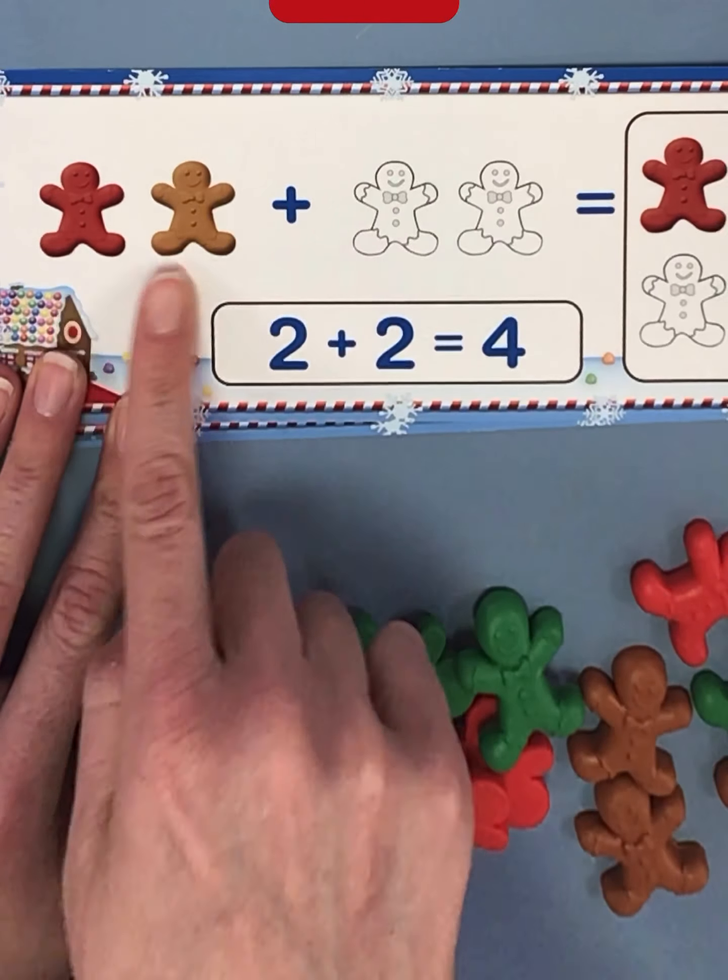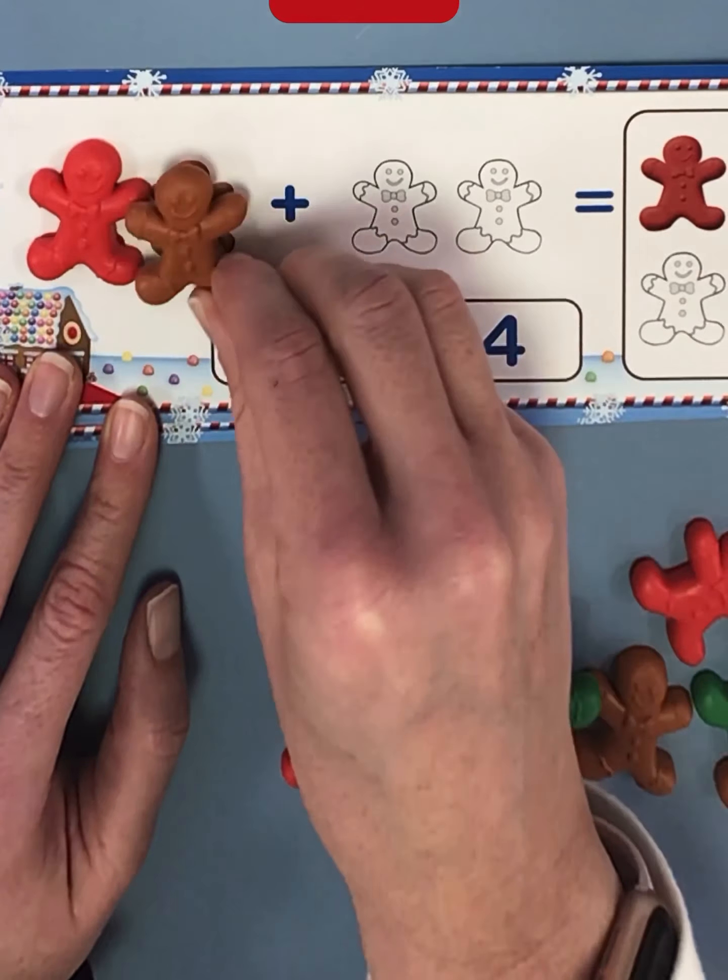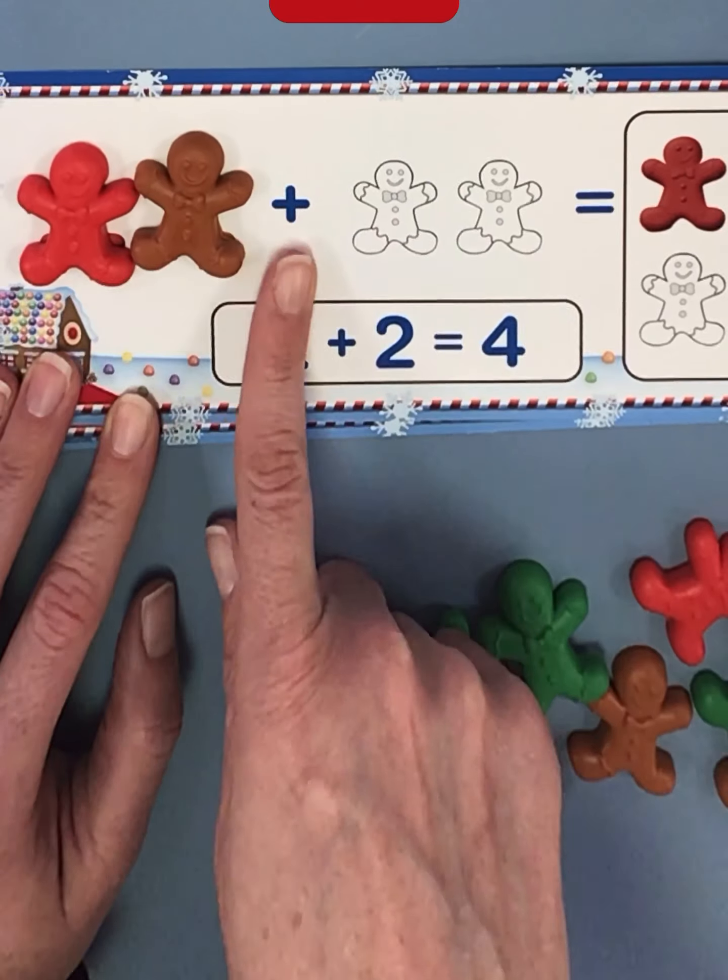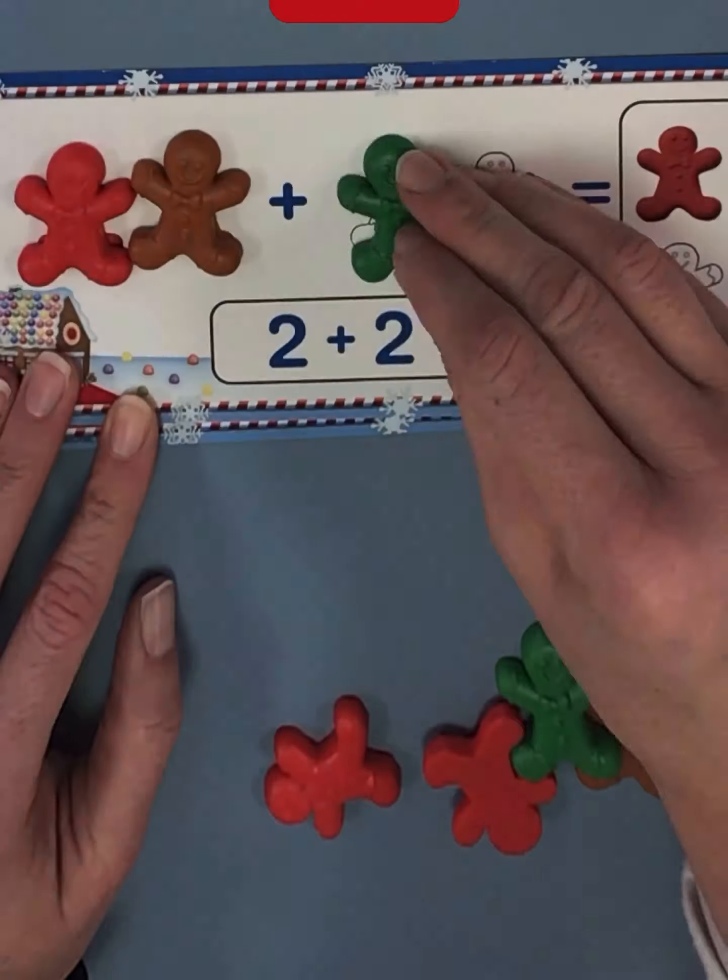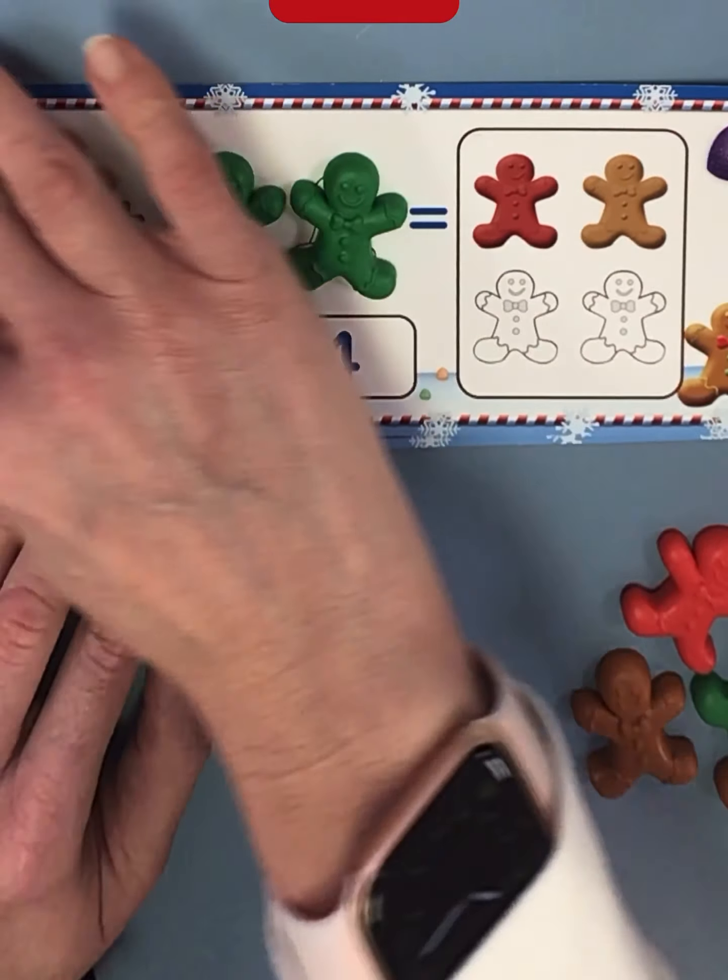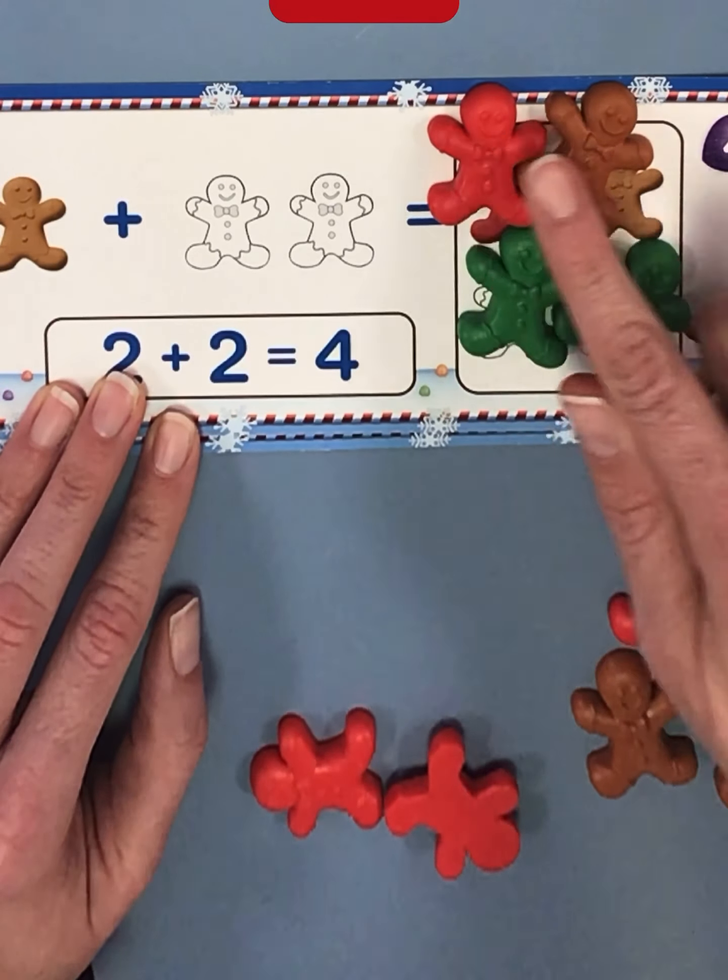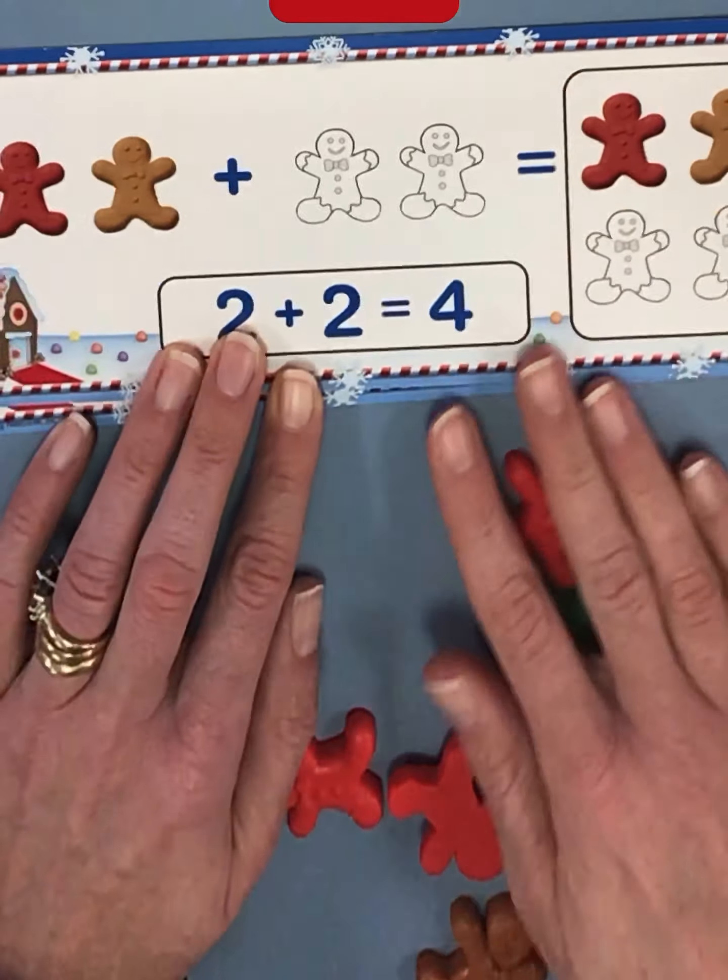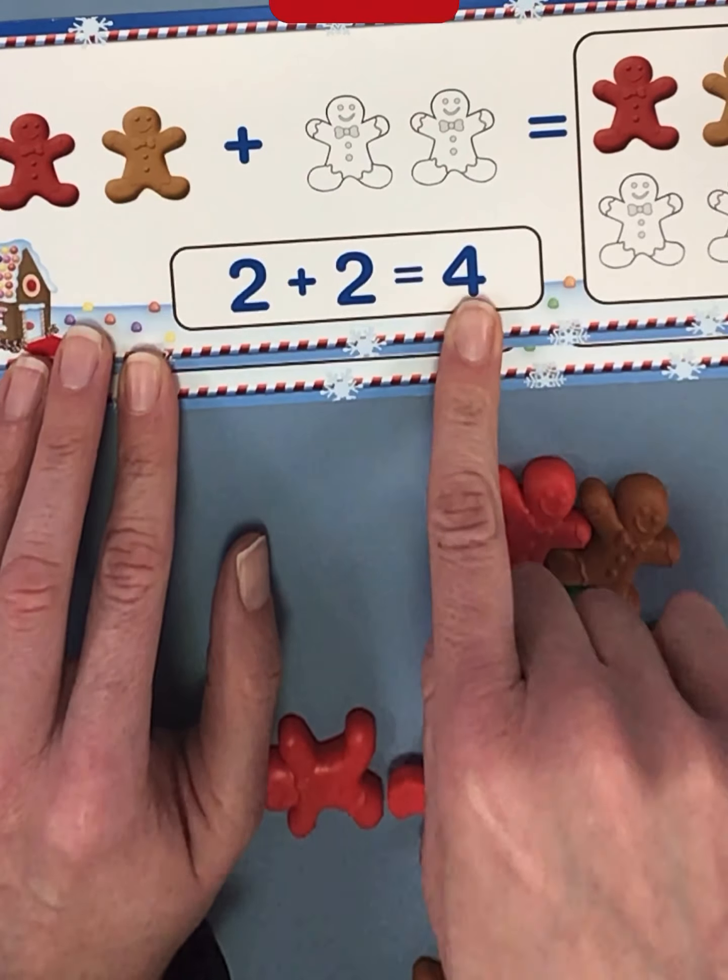This time we're going to start with two cookies. A red one and a brown one. What do they want us to do? Add more. Two plus two equals four. Two plus two equals four. Great job, guys.